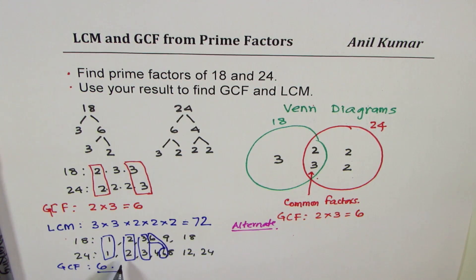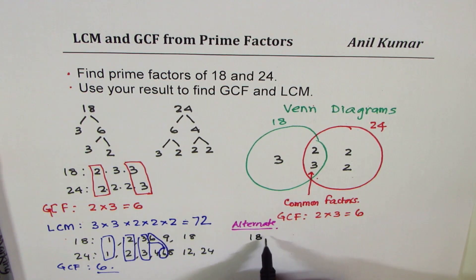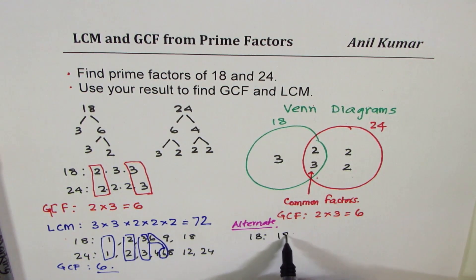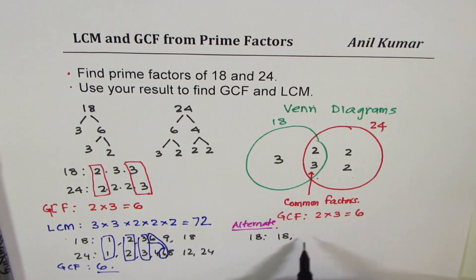However, in this method, you have to list so many factors. And for multiples, what you had been doing? Write multiples. So 18 multiples are 18, times 2, 36, times 3, 54, times 4, twice 36, which is 72, and so on.